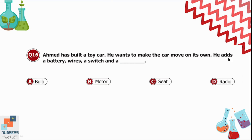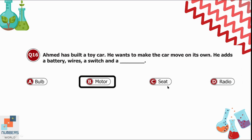Question 16: A student wants a toy car to move on its own using a battery, wires, and a switch. What else will he add? A bulb is not necessary for a car to move. A motor is important because the car needs to move in a circular motion. So he will add a motor — option B is correct.